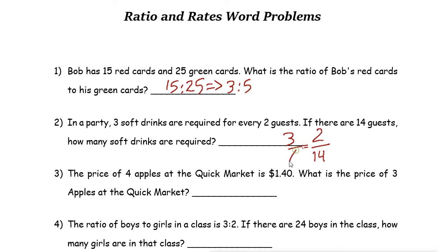So I just wrote a proportion and now we can solve for the unknown variable. So three soft drinks for two guests, how many drinks for 14 guests? Now we can use cross multiplication and solve it.